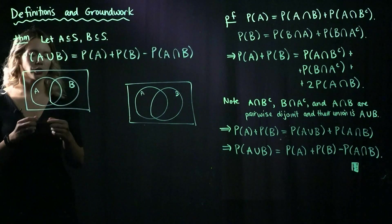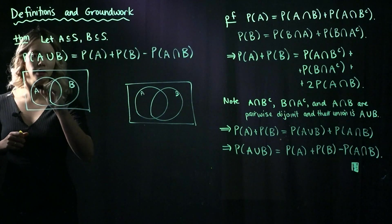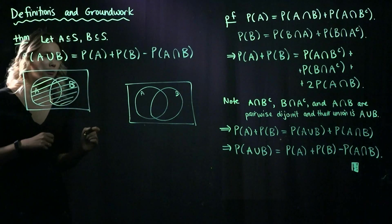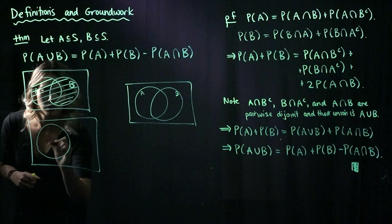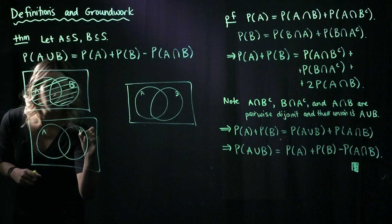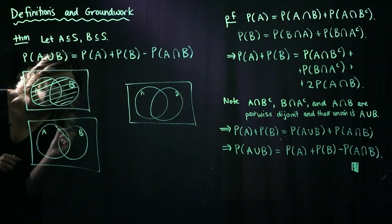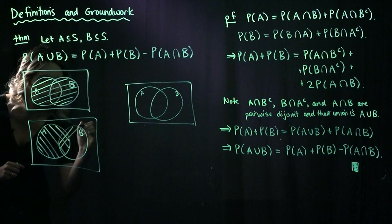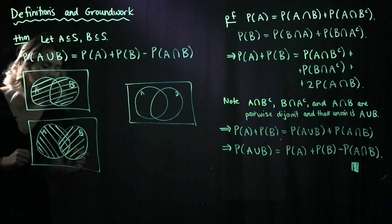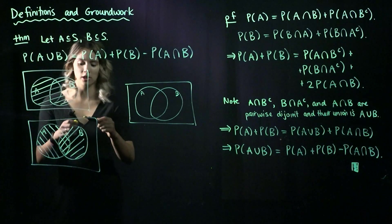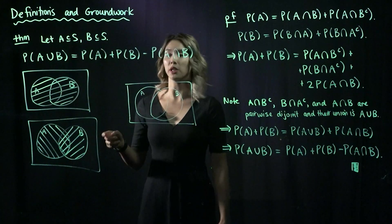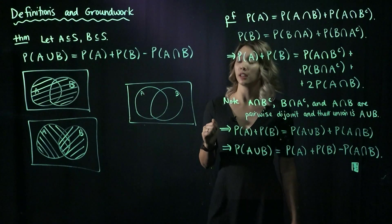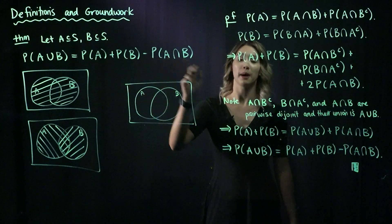So let's look at this. What we're trying to get to is the probability of A union B, which is that shaded area. If we look at the probability of A, that is this region. And then the probability of B is this region. We notice that we have shaded the intersection twice, and we don't want to count the intersection twice — we just want to count everything once. So all we do is subtract off the intersection. That's the intuition for why P(A union B) equals P(A) plus P(B) minus the probability of the intersection.